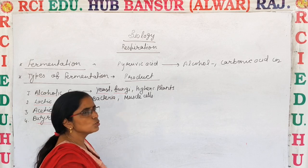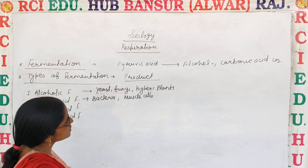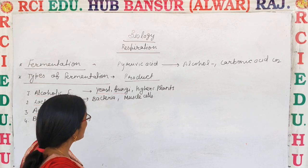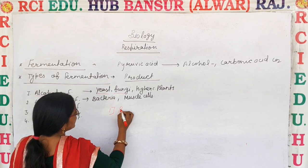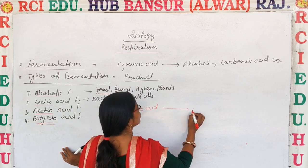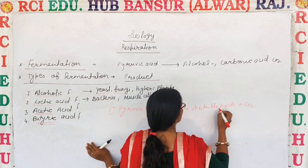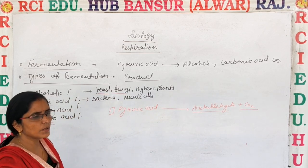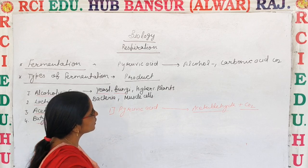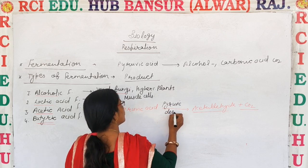First is alcoholic fermentation, which occurs in yeast, fungi, and higher classes of plants. In this process, pyruvic acid from glycolysis breaks down in two steps. In the first step, pyruvic acid is converted into acetaldehyde and CO2 in the presence of the enzyme pyruvic decarboxylase.